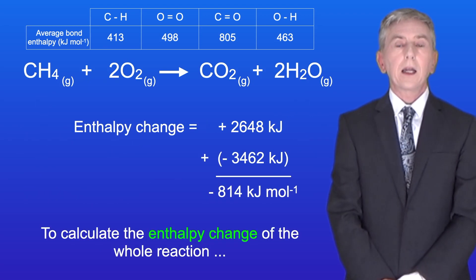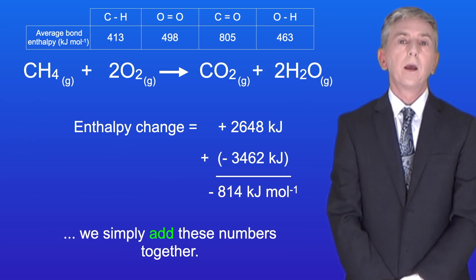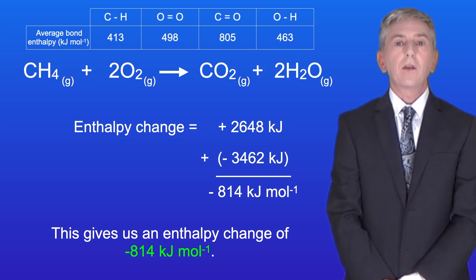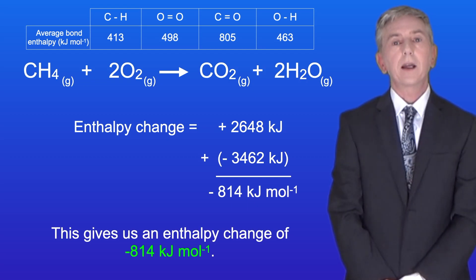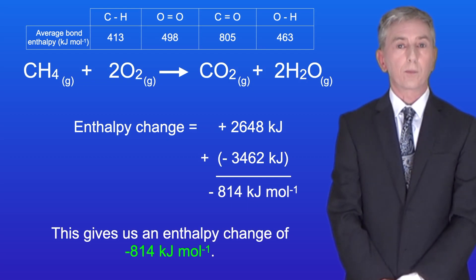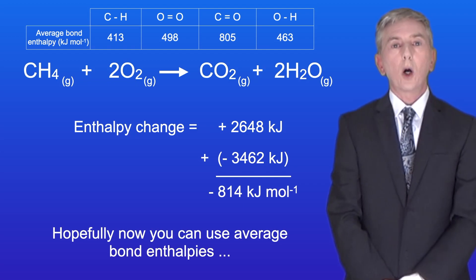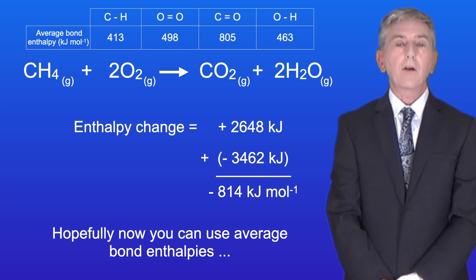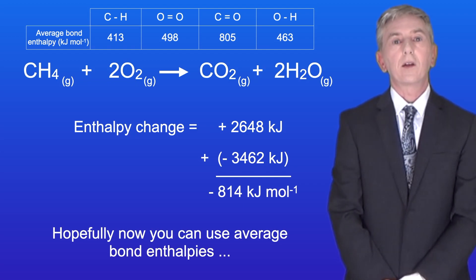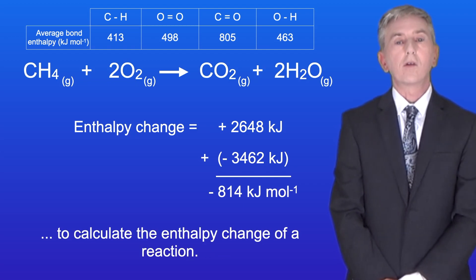To calculate the enthalpy change for the whole reaction, we simply add these numbers together. This gives us an enthalpy change of minus 814 kilojoules per mole. Okay, so hopefully now you can use average bond enthalpies to calculate the enthalpy change of a reaction.